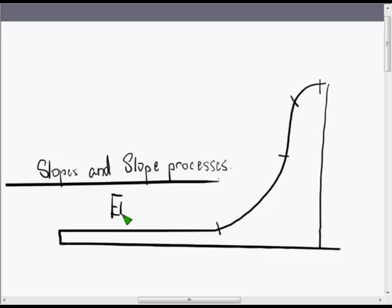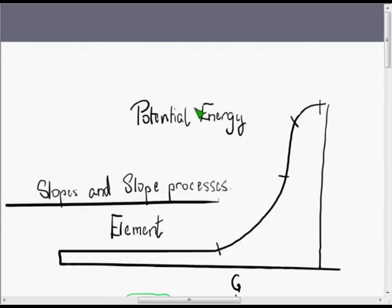So slope processes are dependent on what's going on in a particular slope element. Of course, the slope itself, the angle of the slope, gives you the energy. We talk about potential energy. So the higher up you go, the more potential energy you have. That means not only because of the altitude, but because of the slope angle. Where the slope angle is, it's more likely that potential energy changes into kinetic energy and things start to move. So let's have a look at the different slope elements.